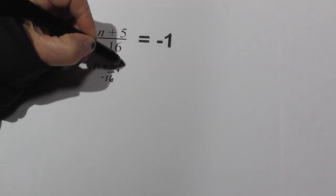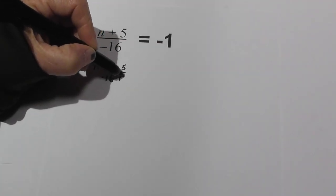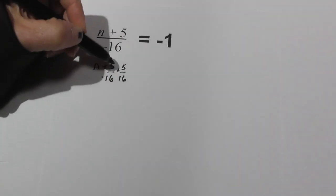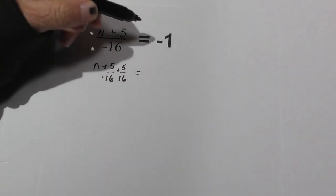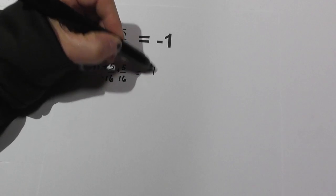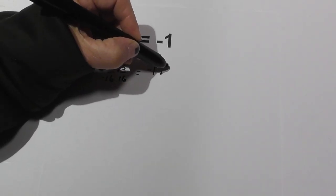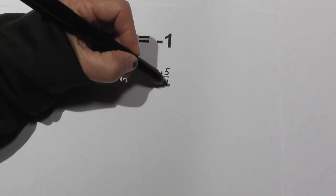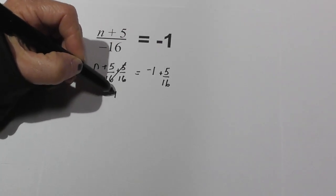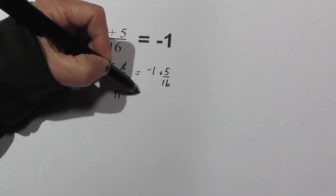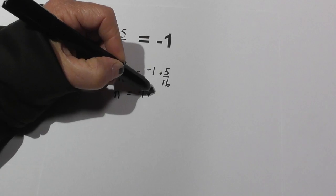What we do to one side we need to do to the other, so we have negative 1 plus 5 over 16. These cancel, you're left with n equals negative 1 plus 5 over 16.